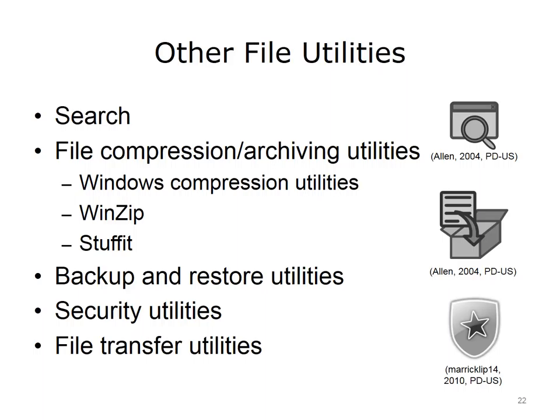Backup and restore utilities refer to programs that allow users to easily backup data and to restore the data from the backup. Backups can be regularly scheduled and can be done incrementally, meaning that only new or changed data is saved in the backup once a full backup exists. Most sensitive systems require regular backups, sometimes multiple backups, and often require that at least one backup resides off-site. Security utilities are programs that help protect a computer from harmful files and unwanted access. These can include firewalls, anti-virus software, anti-spyware, and anti-malware.